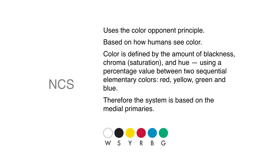The natural color system uses the color opponent principle. So the color opponent principle basically states that when we're receiving wavelengths, we're basically looking at red versus green,